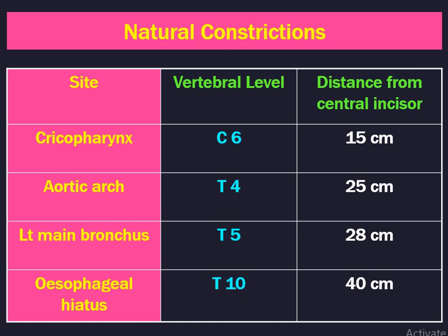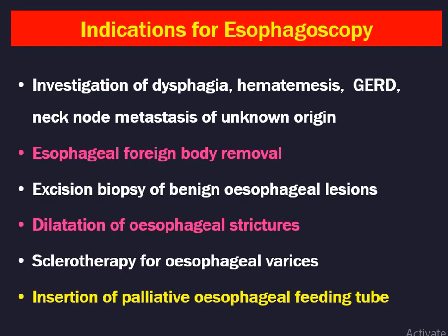Why measure from upper incisors and not lower incisors? Because the mandible is mobile, so the distance is always measured from the fixed structure — the upper central incisors. Indications of esophagoscopy are: investigation of dysphagia, haematemesis, reflux disease, and cervical metastasis of unknown origin. Esophageal foreign body removal — coins, bones — can be performed with rigid esophagoscopy. Excision biopsy of benign esophageal lesions, dilatation of esophageal strictures due to trauma or malignancy, sclerotherapy for esophageal varices, and insertion of palliative esophageal feeding tube in esophageal carcinoma.